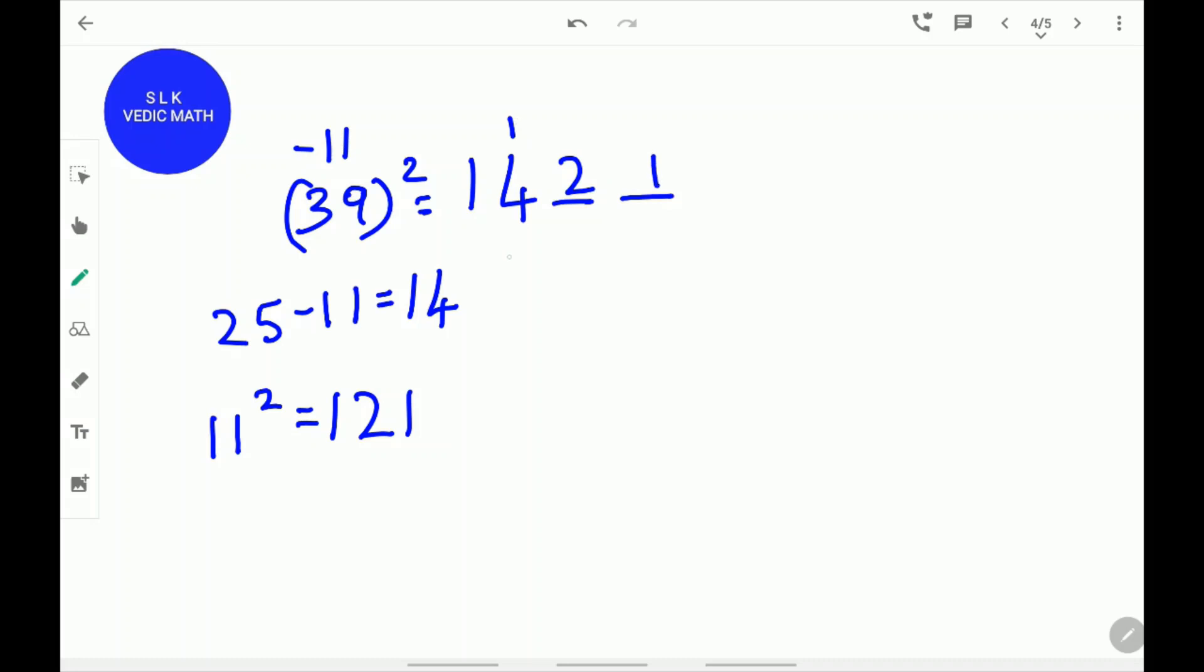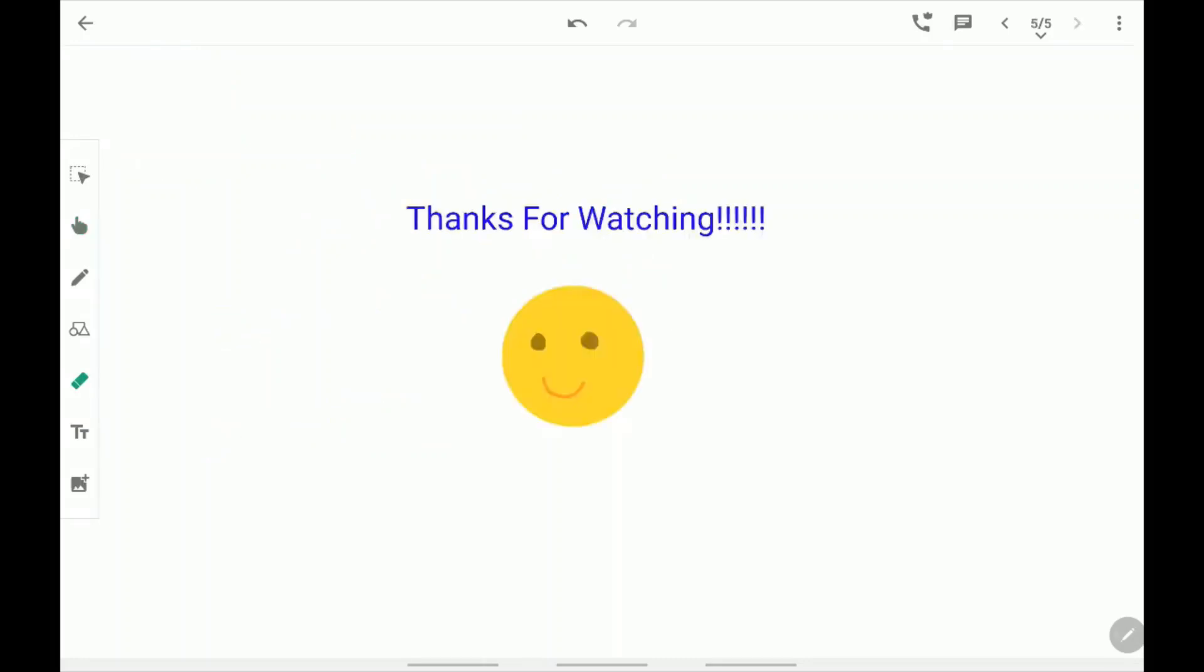Next, add 4 plus 1. 14 plus 1, 5. 21. So, the answer for 39 square is 1521.